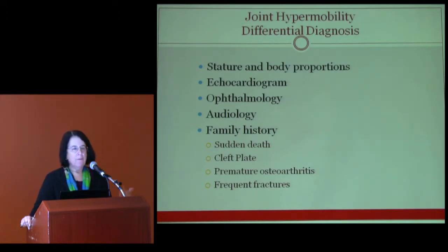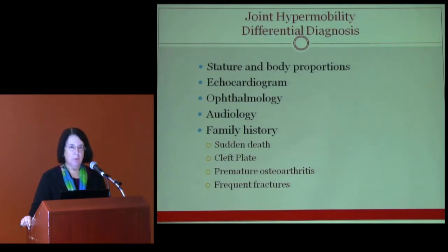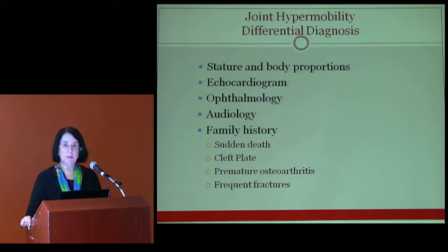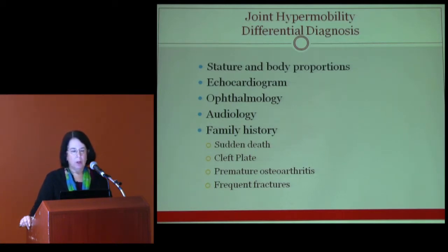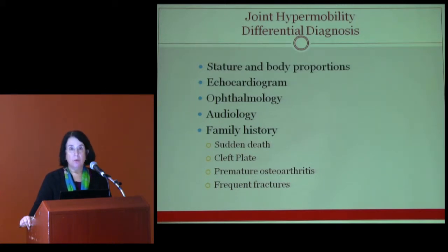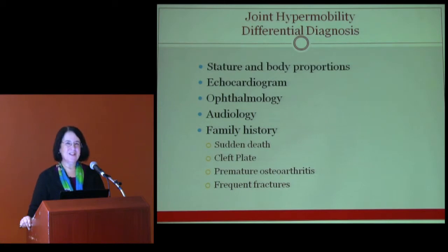When evaluating a patient with joint hypermobility for differential diagnosis, we examine stature and body proportions. We often measure arm span and look at the arm span to height ratio, and measure the lower segment to upper segment ratio, to establish whether the arms or legs are relatively long compared to height. In both Marfan syndrome and Stickler syndrome we see relatively long arms, but the mechanism differs: in Marfan syndrome it's long bone overgrowth, whereas in Stickler syndrome the trunk is relatively short due to vertebral flattening.